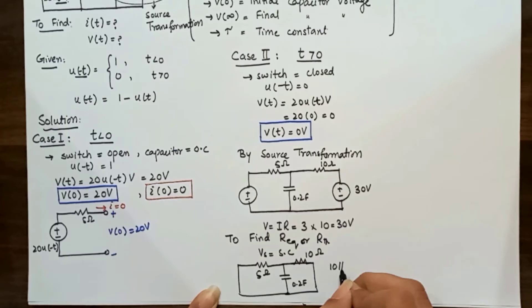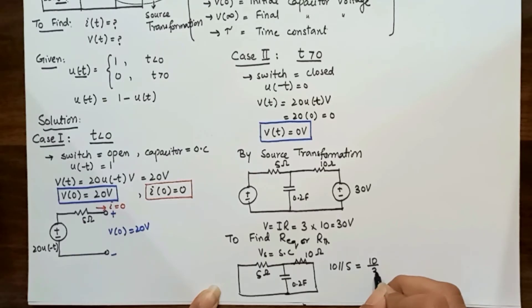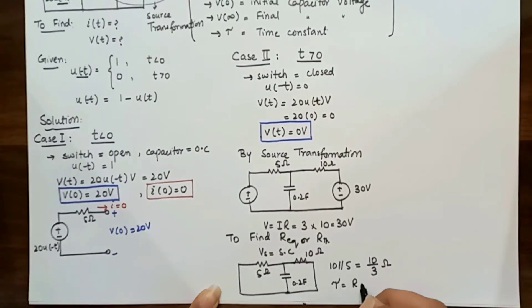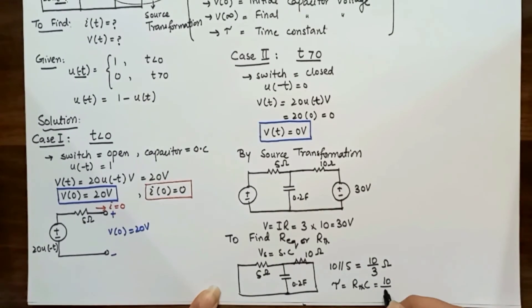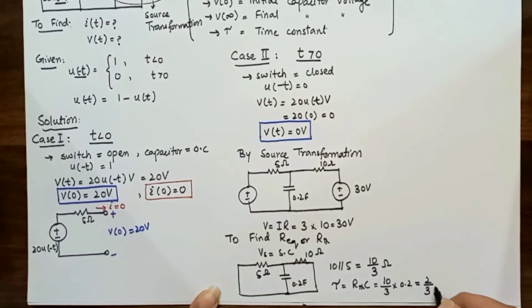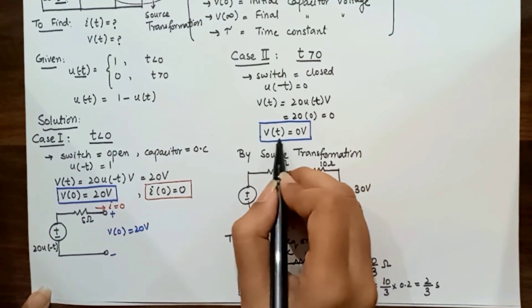10 Ω in parallel with 5 Ω gives 10/3 Ω. So τ = RC = (10/3) × 0.2 = 2/3 seconds.